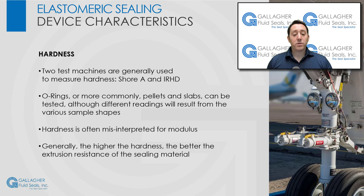In most cases, selecting a 70 Shore A hardness compound does not guarantee the best sealing properties. It is suggested that a grade of CalRez with the proper combination of hardness, chemical resistance, and properties be selected.